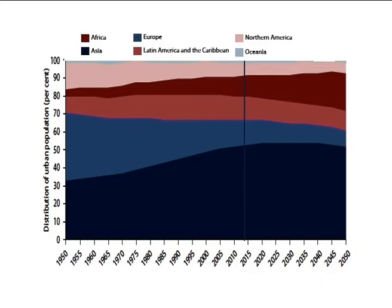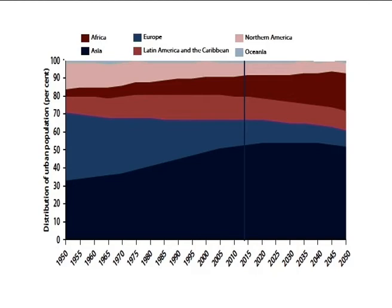The urban population of the world is expected to increase by more than two thirds by 2050, with nearly 90% of the increase to take place in the urban areas of Africa and Asia. The world's urban population is now close to 3.9 billion and is expected to reach 6.3 billion in 2050. Asia, despite its lower level of urbanization, is today home to 53% of the urban population in the world. Europe has the second highest share of the world's urban population at 14%, followed by Latin America and Caribbean with 13%, as shown in Figure 5b. By mid-century, the urban population of Africa is likely to triple.